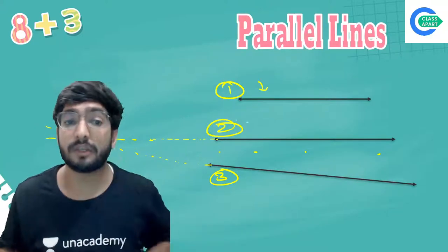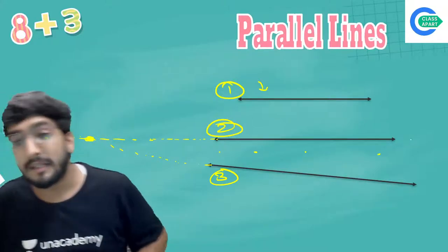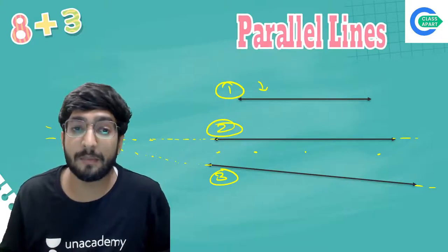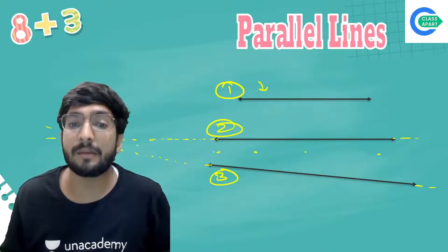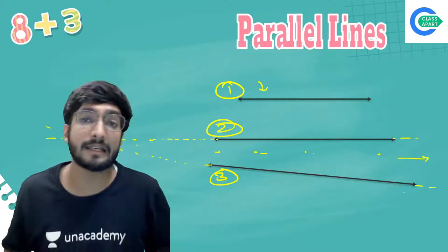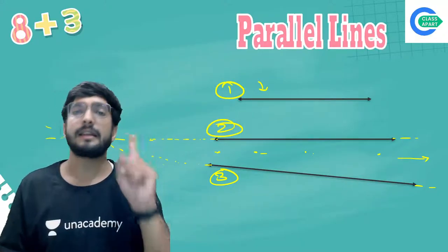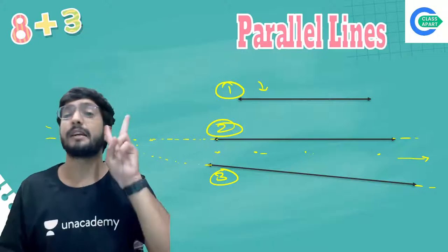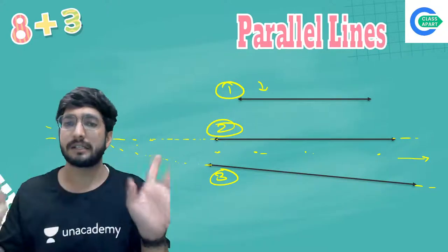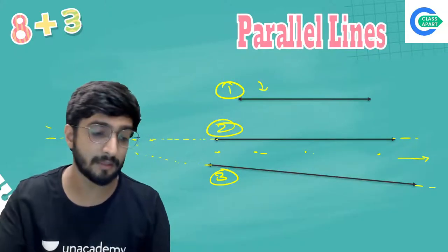To understand parallel lines, place two scales next to each other. Measure the gap between them at the starting point, mid point, and end point — it will always be equal throughout. That equal gap means they can never cut each other. But if the gap is decreasing, it means the lines will eventually intersect. Two straight lines meet at one point; parallel lines never meet.